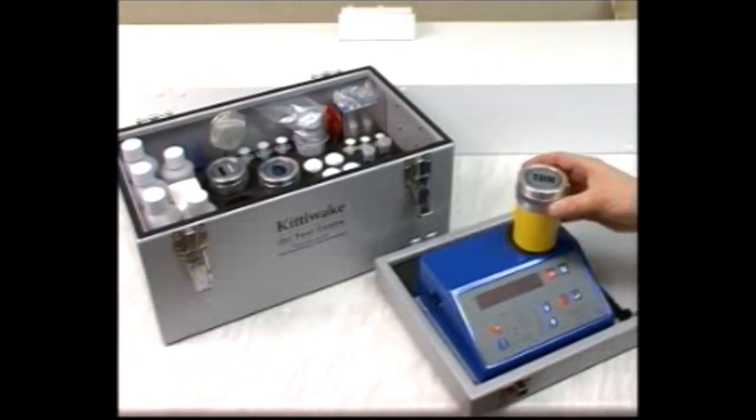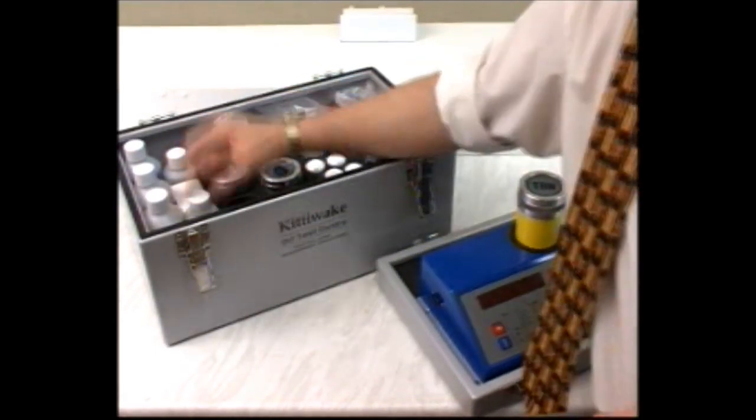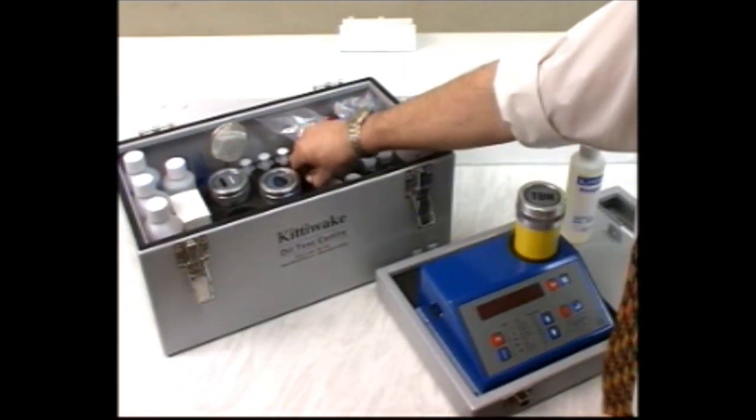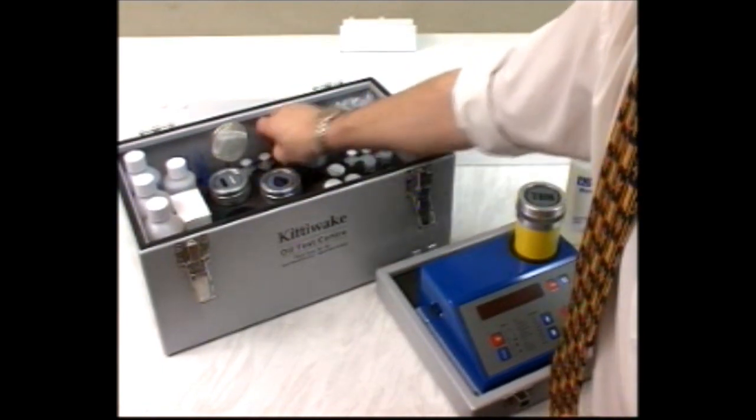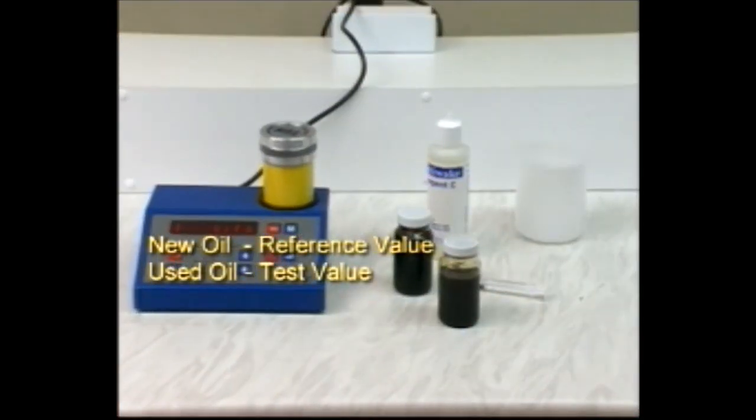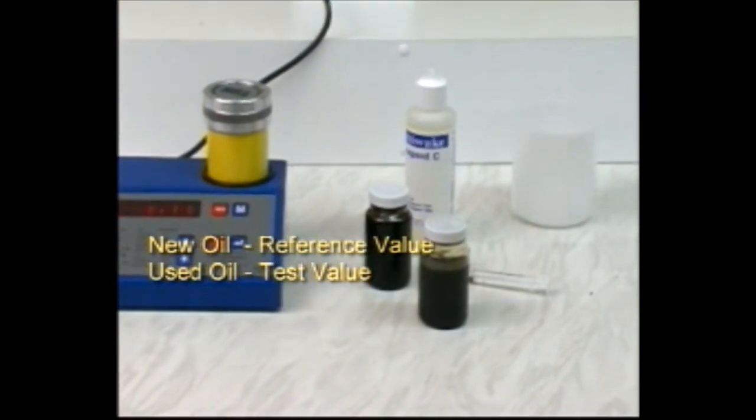This section shows you how to determine the total base number value of the used oil. You will need two values: the reference value from new oil in the storage tank tested once when loaded, and the test value from used oil in the engine.